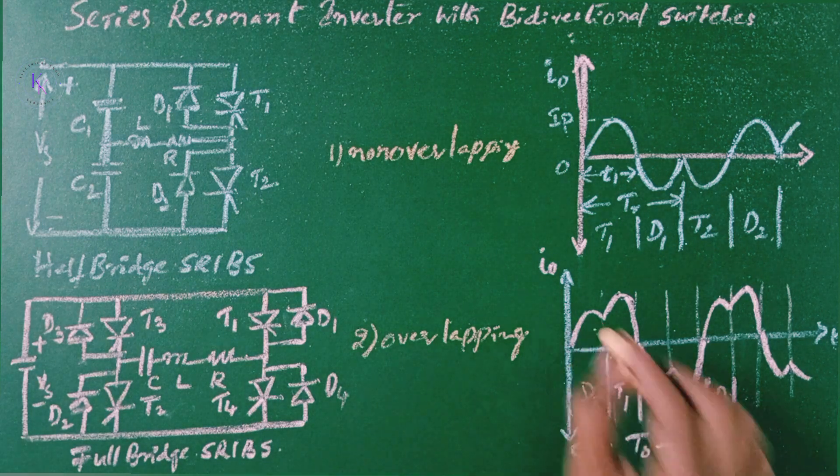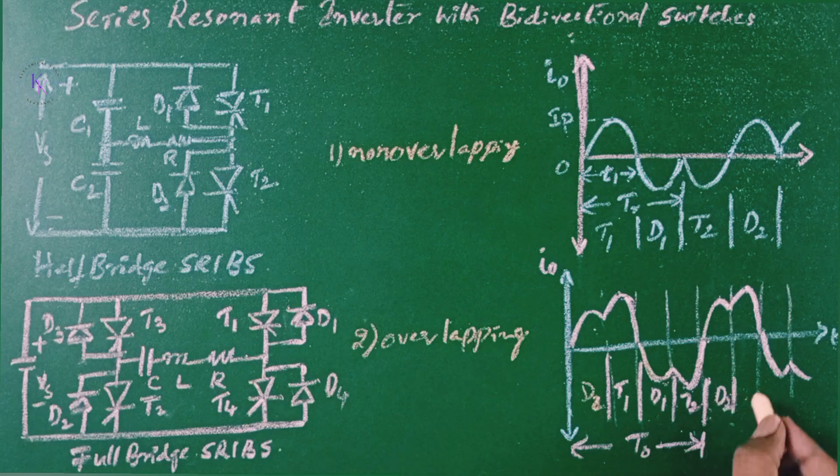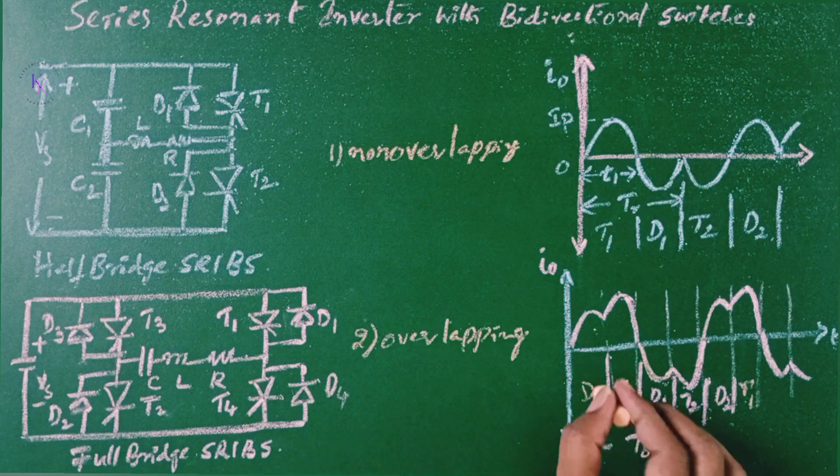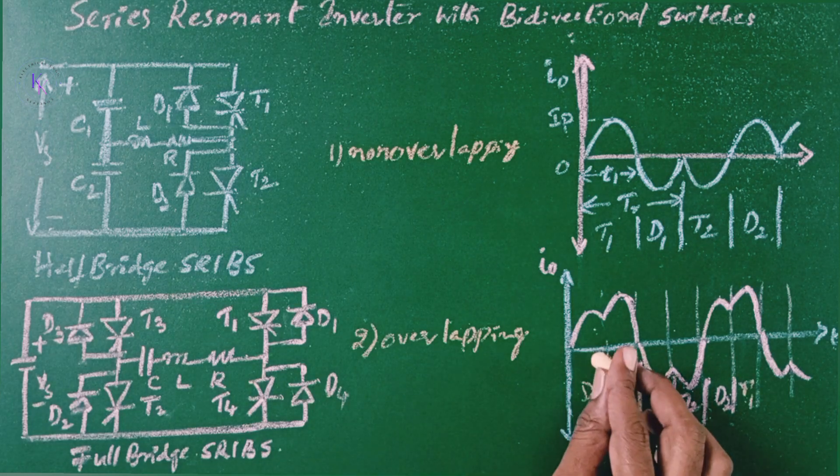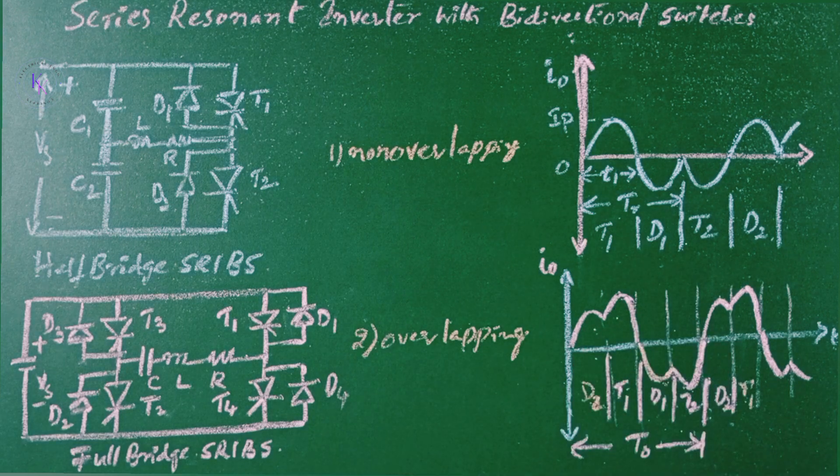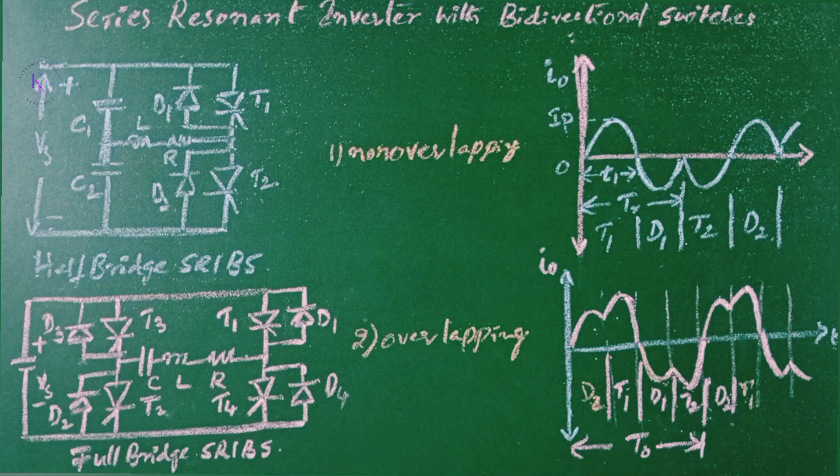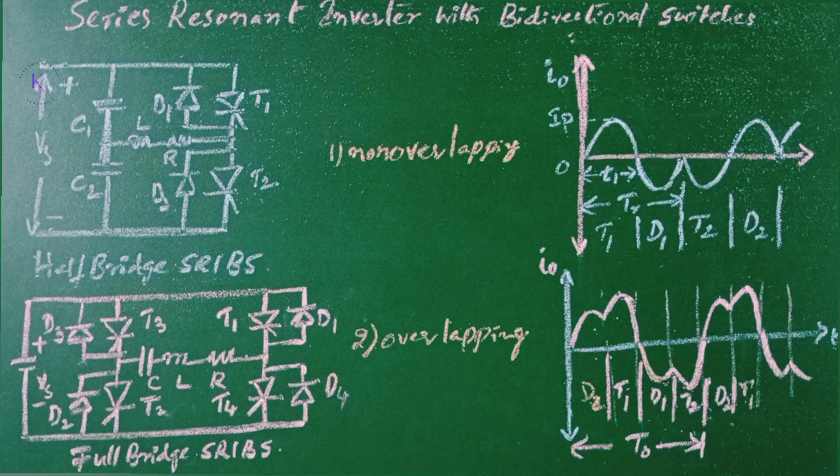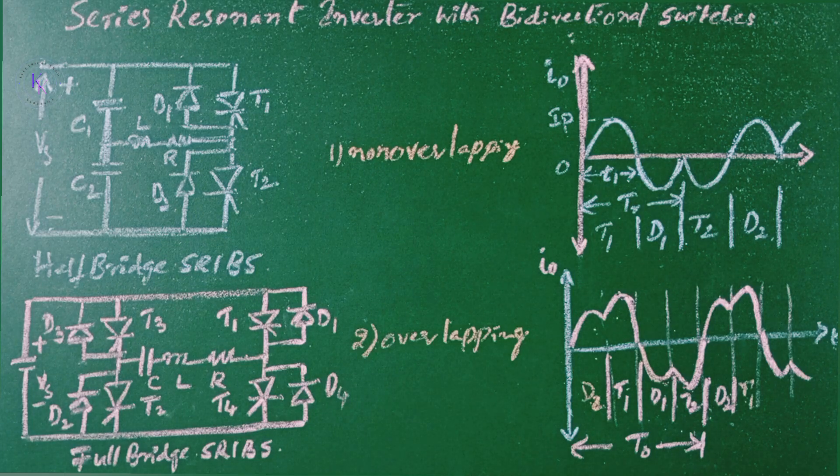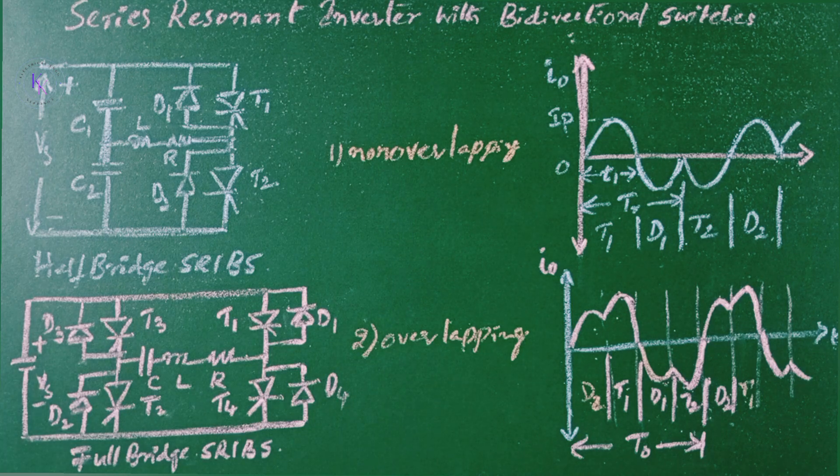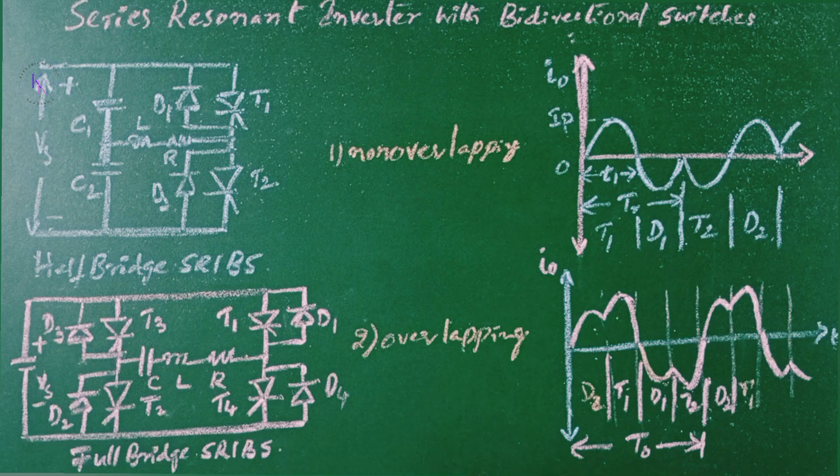D2 is turned on before. You can see after this D2 is turned on, then again it is T1, right? So, before D2 turns off, T1 is fired here. This is overlapping. The overlapping operation increases the output frequency and the output power is increased. This is regarding series resonant inverter with the bidirectional switches and different configurations, the basic half-bridge and full-bridge and the responses of the output current waveforms.